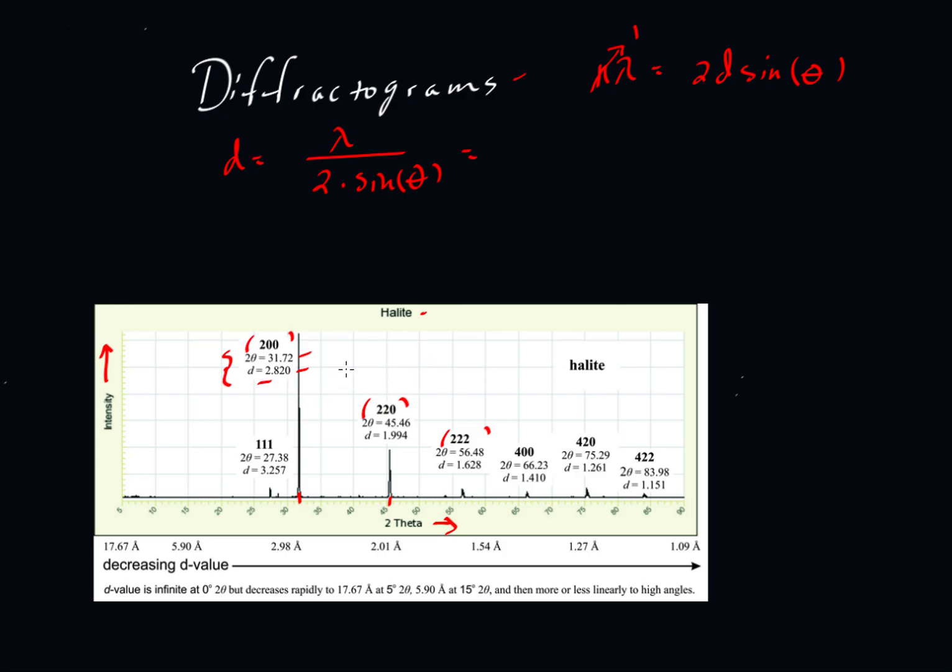More than likely, this diffractogram was generated using a copper source, and that copper source would have a wavelength of 1.5406 angstroms. Some other XRD instruments will use cobalt, where the wavelength is 1.79 angstroms. But we're going to use copper here, because I'm pretty sure that's how this was generated.